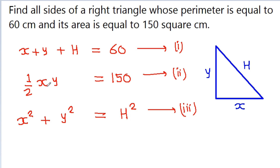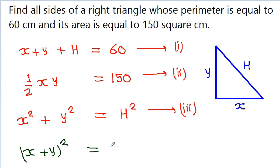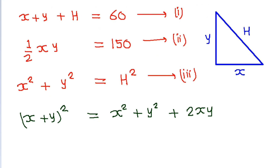In order to combine these equations, we have x plus y plus h from equation 1, and x, y from equation 2, and x squared plus y squared from equation 3. We use the formula: (x + y)² equals x² plus y² plus 2xy.